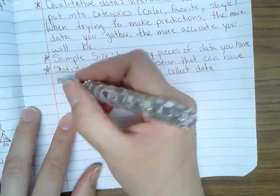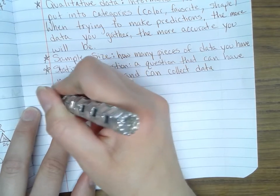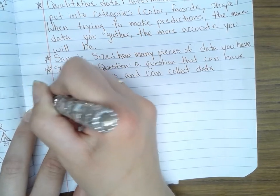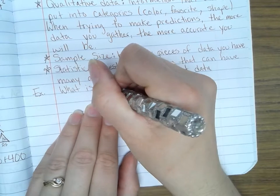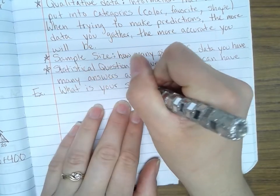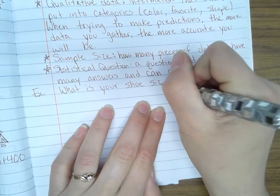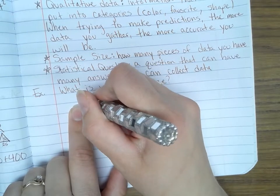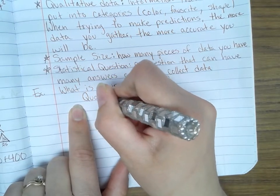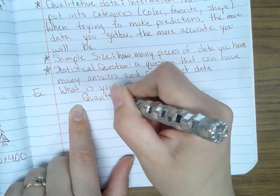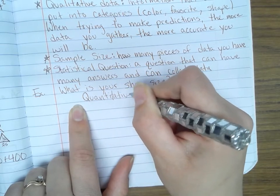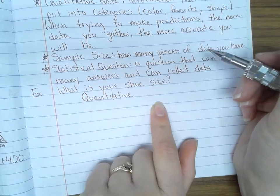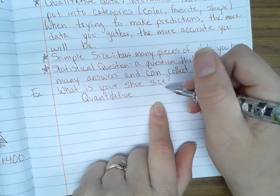Let's do an example. This is an example of a statistical question. What is your shoe size? This will get a quantitative answer because I can get numbers from this. And it is statistical because I can get many different responses.